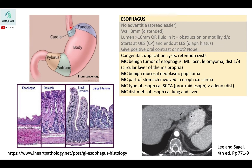Esophageal carcinoma can spread by local extension to the cardia of the stomach. The most common type of esophageal cancer is squamous cell carcinoma (SCCA), seen in the proximal to mid esophagus. This is because ingested toxins affect the proximal or mid esophagus, and carcinoma from that mechanism would occur in those regions.